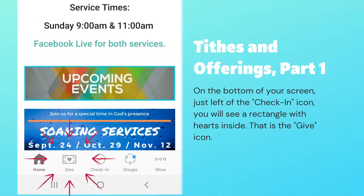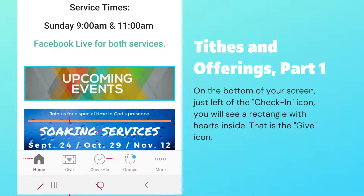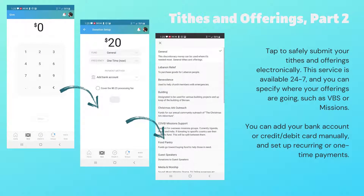Now look at the bottom of your screen again. Go to the immediate left of the check-in icon — you'll see a rectangle-shaped icon with tiny hearts in it. That's the give icon, and it's a fast, easy, and secure way to submit your tithes and offerings. Tap that now, even if you aren't giving today, just so you can see the options available. You can type in the amount you want to give, then determine where the funds will go — your regular tithe would go to the general fund, and any offerings can be designated to over a dozen different areas of need within the church.